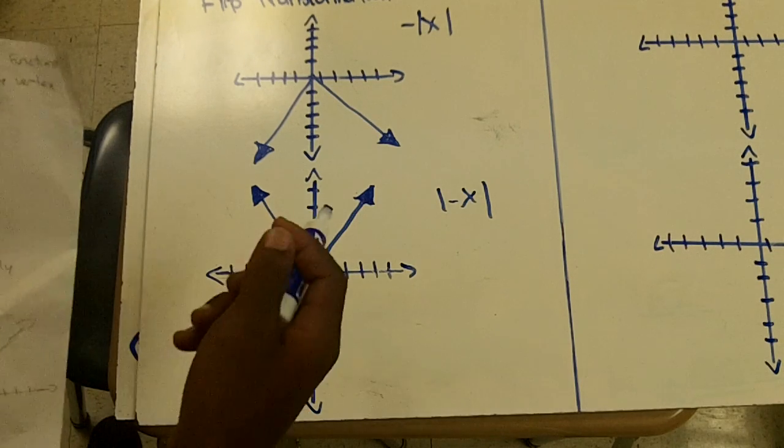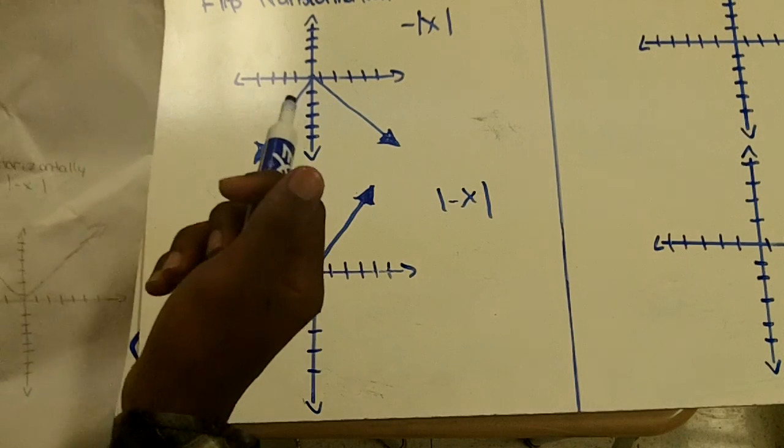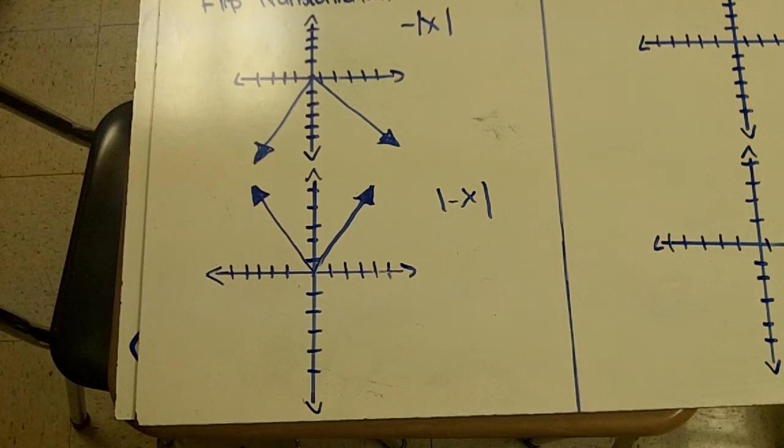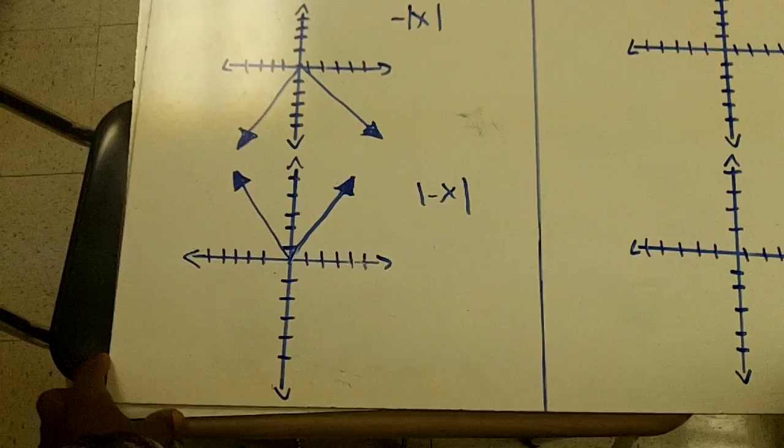The absolute value function always flips over the vertex. Okay, then we move on to translations.